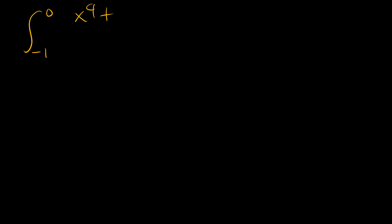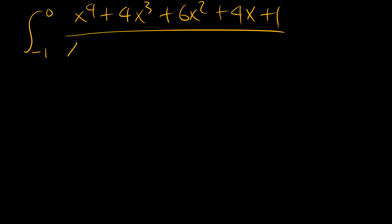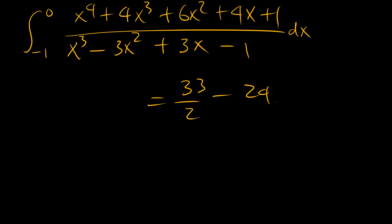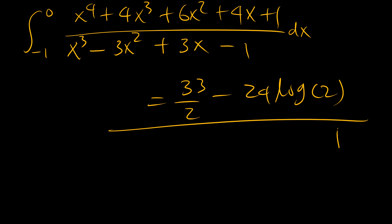So our final answer — the integral from negative 1 to 0 of x to the power 4 plus 4x cubed plus 6x squared plus 4x plus 1, over x cubed minus 3x squared plus 3x minus 1 — equals 33 over 2, minus 24 log 2. And that there is the answer. Thank you so much for your attention. Kind of interesting, but I hope you had fun.